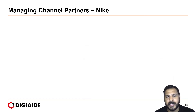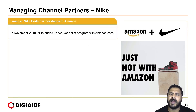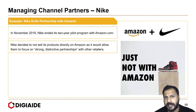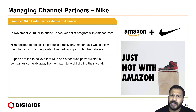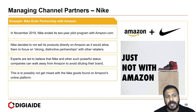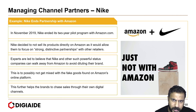The final case study is Nike. Nike ended their partnership with Amazon. In November 2019, Nike ended its two-year pilot program with Amazon.com. Nike decided to not sell its products directly on Amazon as it would allow them to focus on strong, distinctive partnerships with other retailers. Experts believe that Nike and other similarly powerful brand companies can walk away from Amazon to avoid diluting their brand, particularly to avoid being mixed with fake goods found on Amazon's platform. This further helps the brand to chase sales through their own digital channels.